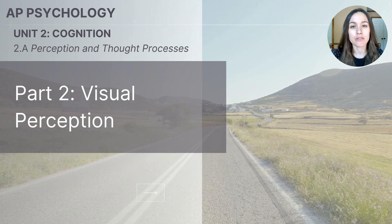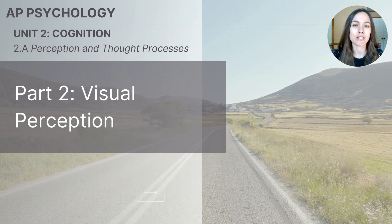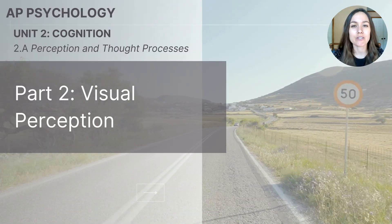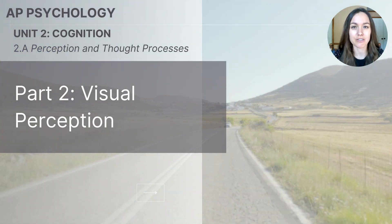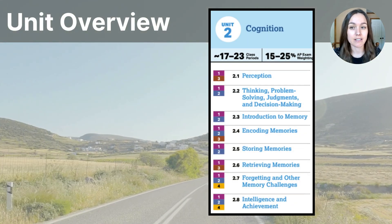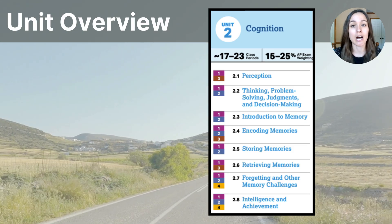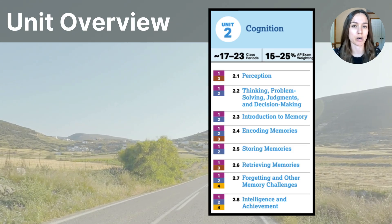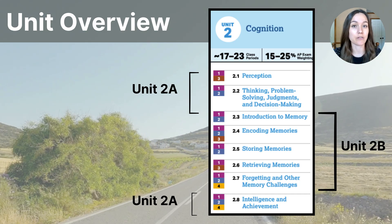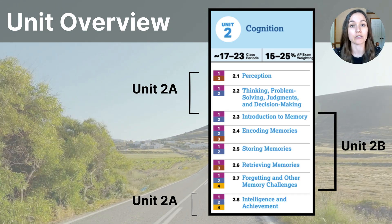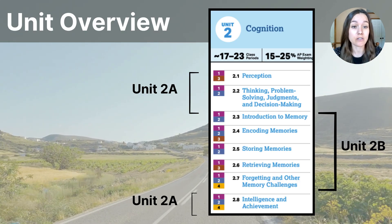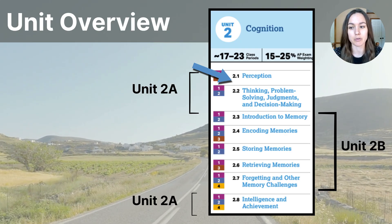Hi everyone. This video is part two of the 2A series on perception and thought processes in the Unit 2 Cognition series for AP Psychology students. I have separated Unit 2 into two parts, and this particular lesson falls within the first section, which I'm calling 2A. As you can see on the unit outline, we're still in the first topic titled Perception.